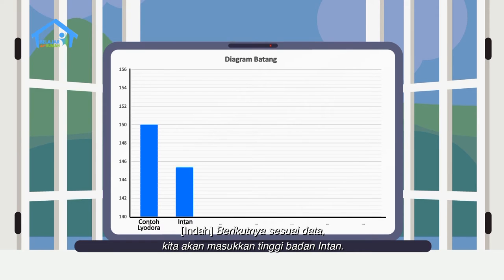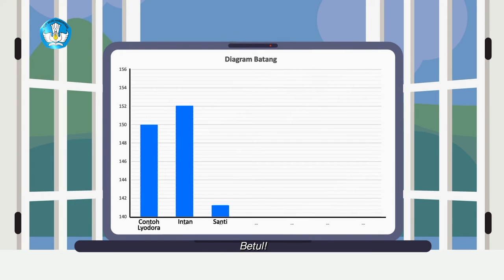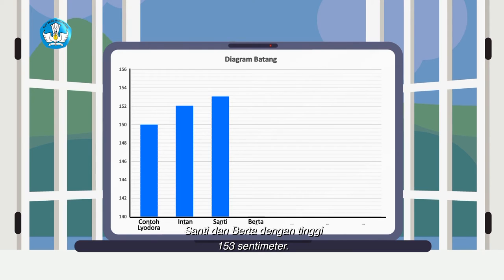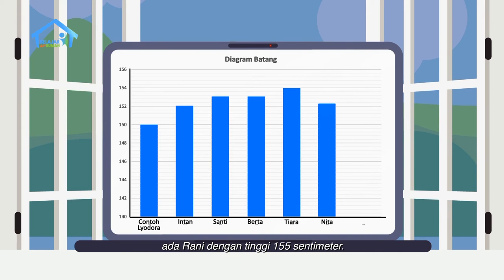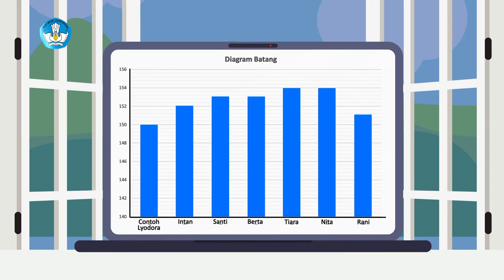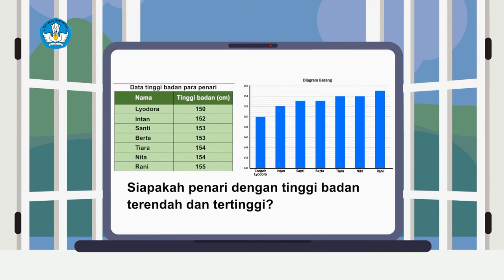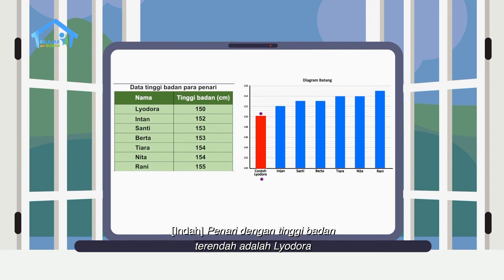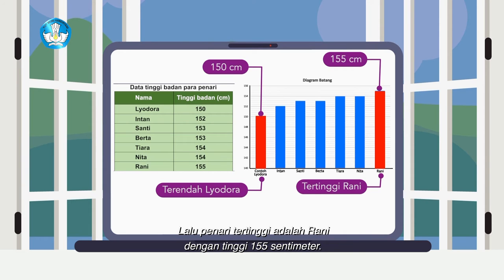Berikutnya, sesuai data, kita masukkan tinggi badan Intan, tingginya adalah 152 cm. Lalu berikutnya, Santi dan Berta dengan tinggi 153 cm. Setelah itu, ada Tiara dan Nita dengan tinggi 154 cm. Dan yang terakhir, ada Rani dengan tinggi 155 cm. Berarti, siapakah penari dengan tinggi badan terendah dan tertinggi? Penari dengan tinggi badan terendah adalah Leodora dengan tinggi 150 cm, lalu penari tertinggi adalah Rani dengan tinggi 155 cm.